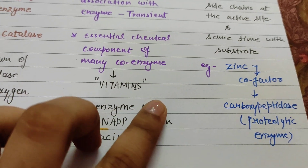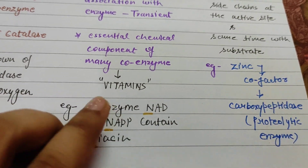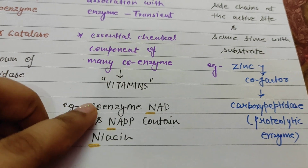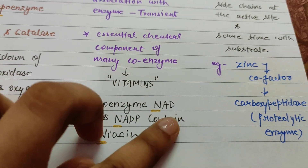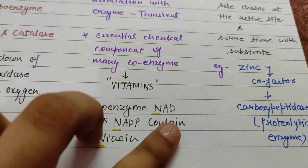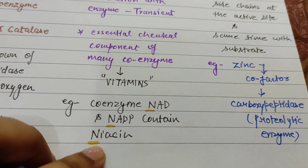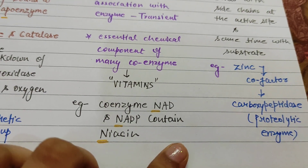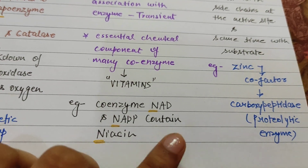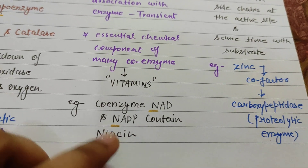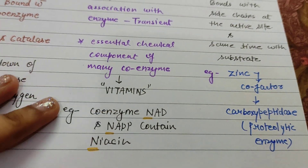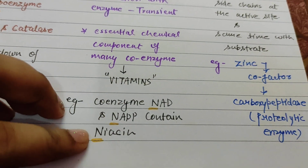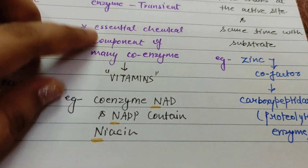The examples of co-enzymes are NAD and NADP. Both NAD and NADP are co-enzymes which contain niacin. Niacin is Vitamin B3 — the chemical name of Vitamin B3 is niacin. Remember: N for NAD, N for NADP, and N for niacin.